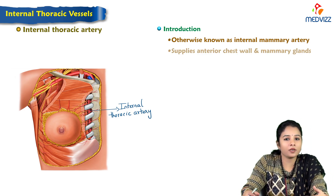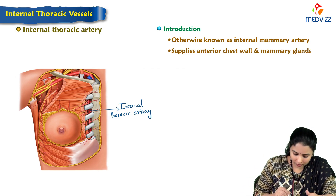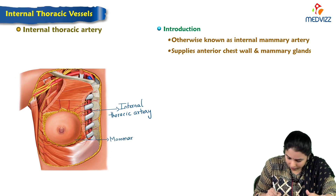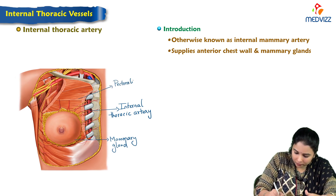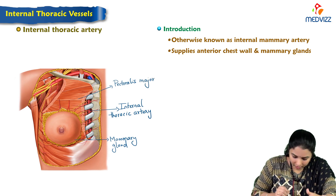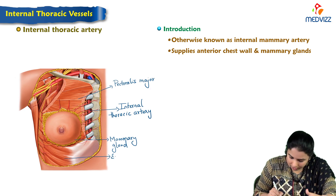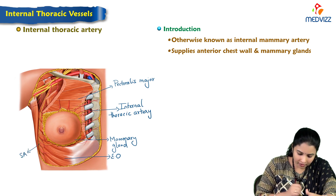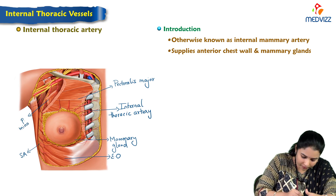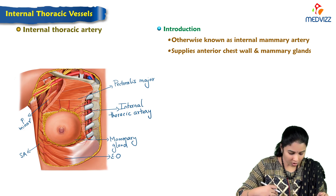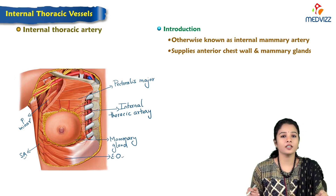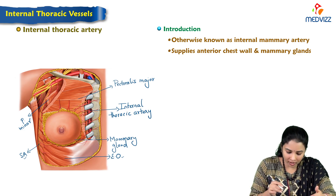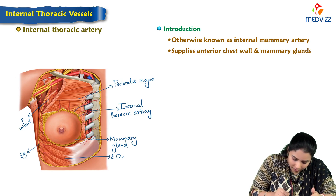This artery supplies mainly the anterior chest wall and mammary gland. We can appreciate the rest of the anterior chest wall, including pectoralis major muscle and other muscles like external oblique, serratus anterior, and pectoralis minor. The internal thoracic artery is giving off branches to the mammary gland as well as to the anterior chest wall, as we can see in this image.